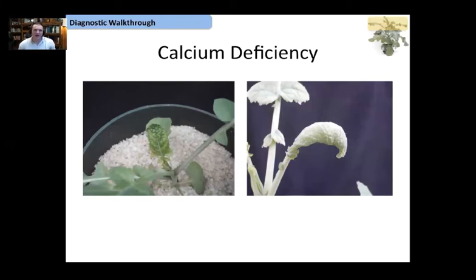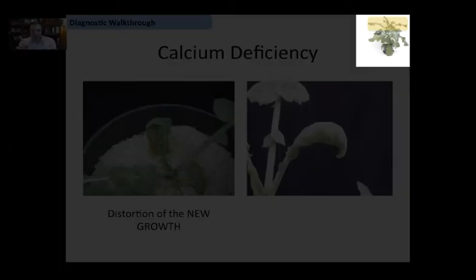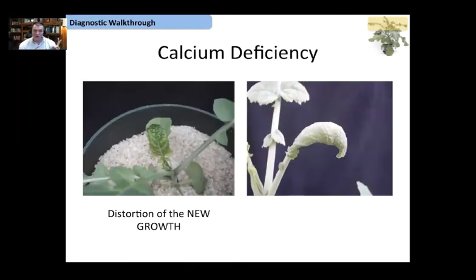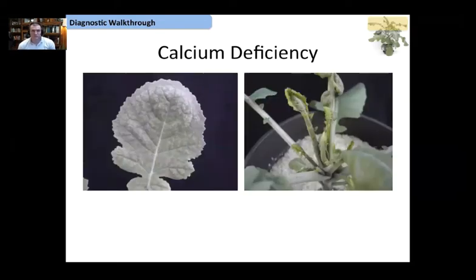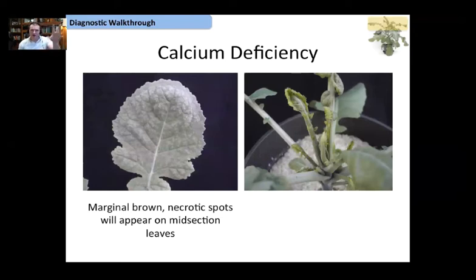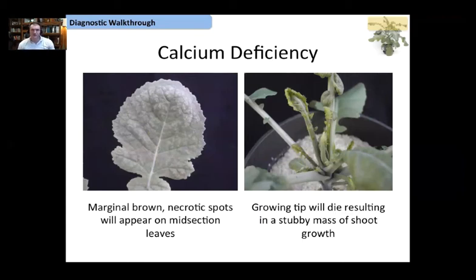Calcium deficiency in Carinata started out as a distortion of the new growth — remember, we're in the upper portion of the plant. Calcium deficiency is going to distort the edge of the leaf. As the new leaf expands, the margin experiences limiting calcium, causing the leaf to have a hood structure — a cupping of the leaf, cupping in on itself. As calcium deficiency progresses, you get necrotic mottling over the leaf surface, and eventually the death of the growing tip, which causes proliferation of axillary shoots.